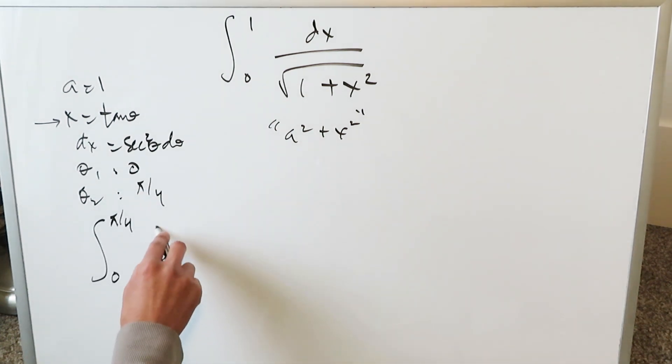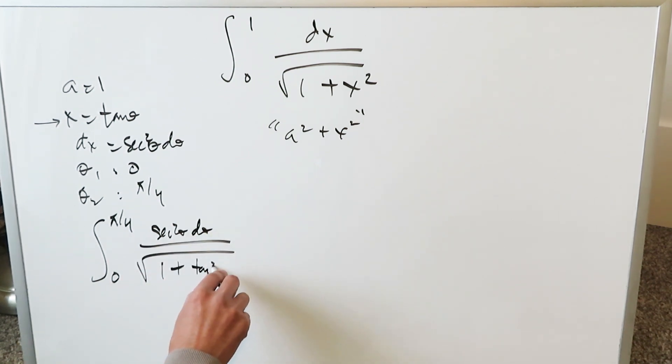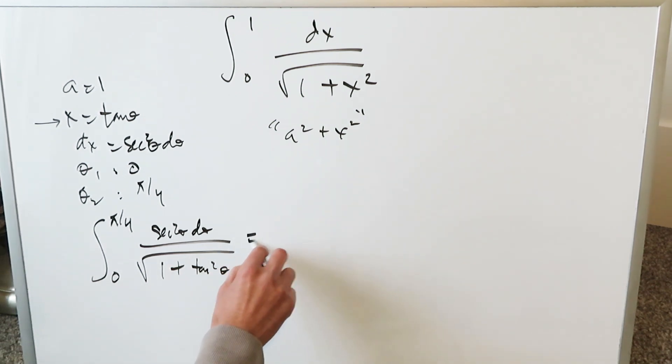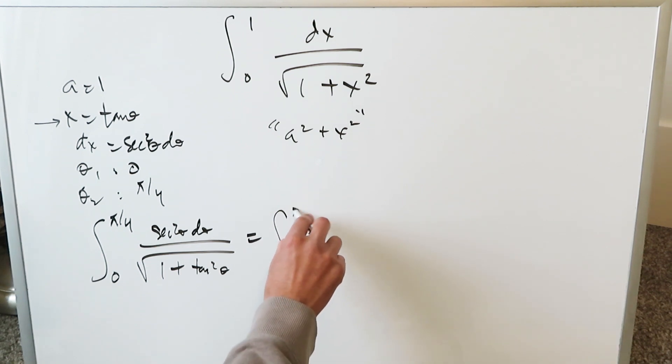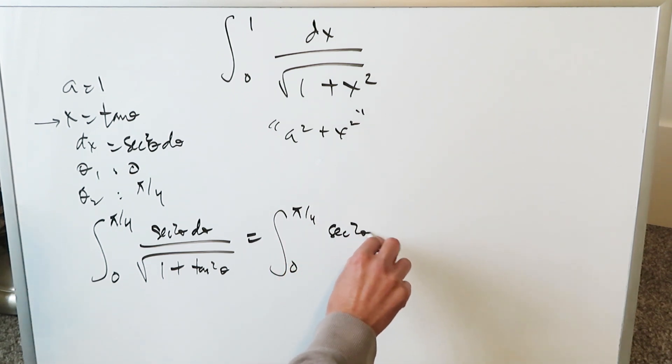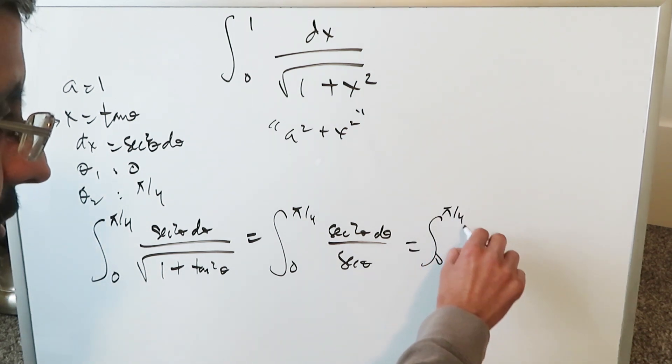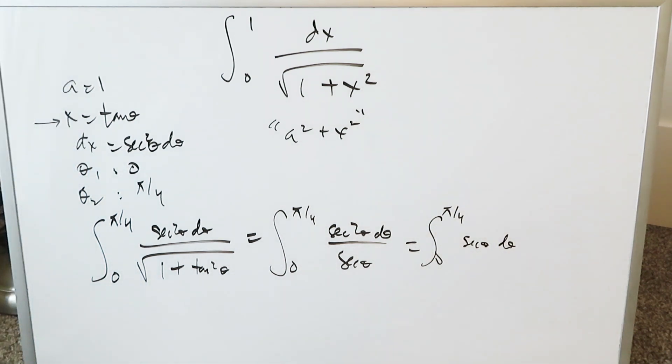Bring in your substitution. dx is secant squared theta d theta. Here in the denominator you'll have 1 plus tan squared theta. You know this is a trigonometric identity equal to secant squared theta. When you do the root of that you're going to get secant theta. You'll have secant squared theta d theta divided by secant theta. When you simplify this you're having 0 to pi over 4 secant theta d theta.